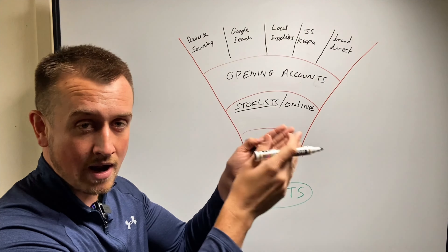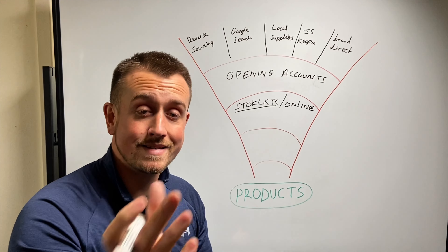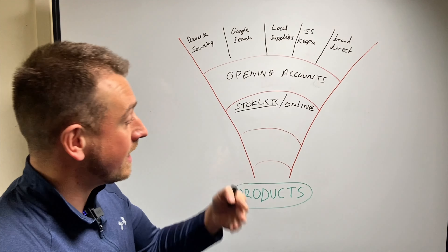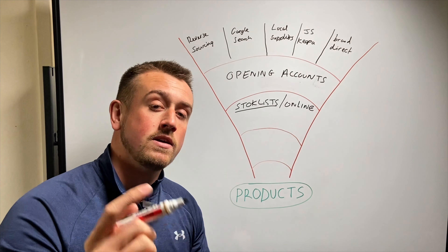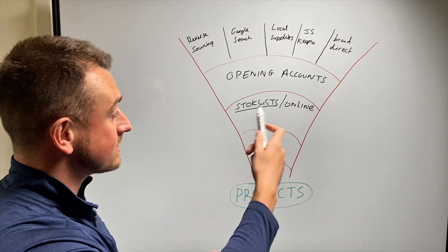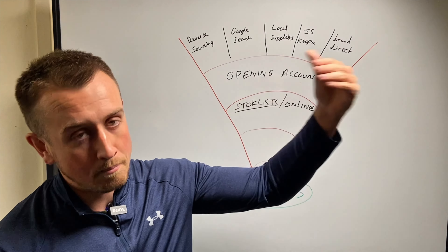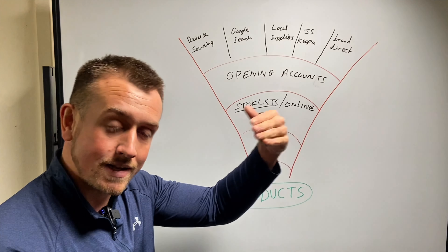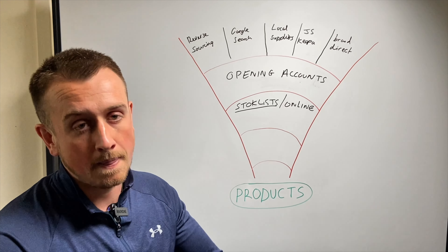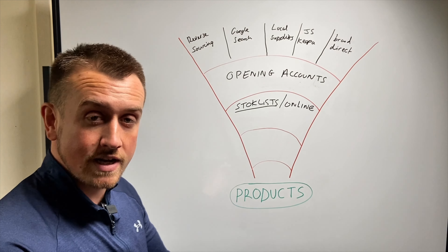If you don't know what a stock list is, basically it's a spreadsheet with every single product that supplier stocks. It will have obviously the brand, the name, the size, the weight, the price, and the EAN number. The main things we're looking at are the EAN number and the price. Then all we're going to do is get that stock list and go over the products one by one, comparing them to the same product on Amazon — and if there's a profit in it, we might order that product.